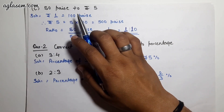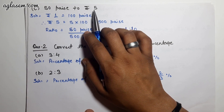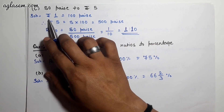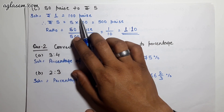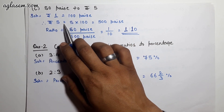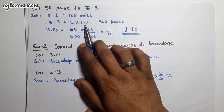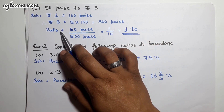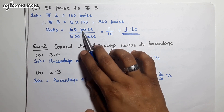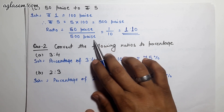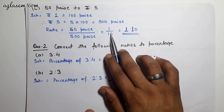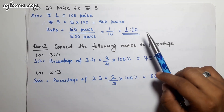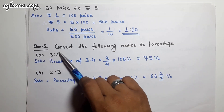Part C: 50 paisa to rupees 5. We convert rupees 5 into paisa. Since rupees 1 equals 100 paisa, rupees 5 equals 500 paisa. The ratio is 50/500 = 1/10, so the ratio is 1:10.